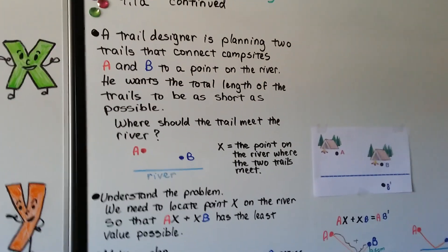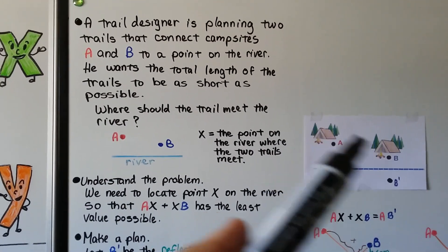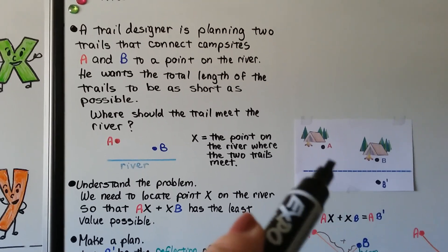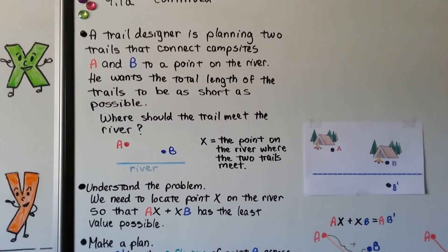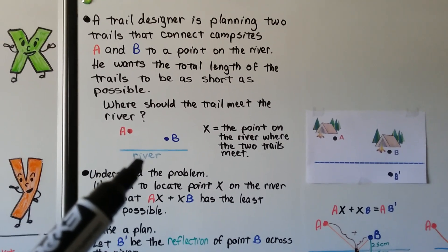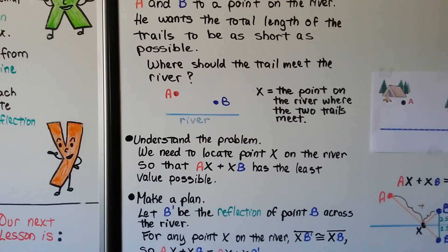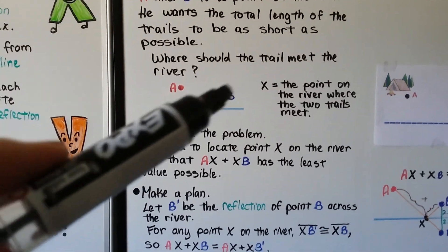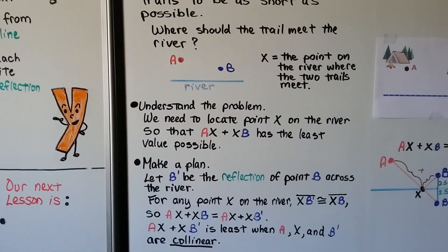A trail designer is planning two trails that connect campsites A and B to a point on a river. The blue line represents the river, and the designer wants the total length of the trails to be as short as possible. We need to locate point X on the river so that AX plus BX has the least possible value — the shortest trail.